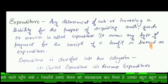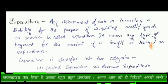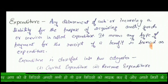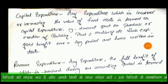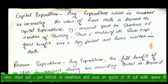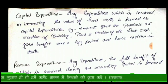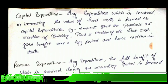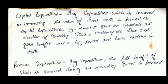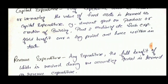Expenditure is classified into two categories: capital expenditure and revenue expenditure. Any expenditure which is incurred for acquiring or increasing the value of fixed assets is termed as capital expenditure — for example, amounts spent on purchase or erection of a building, or purchase of plant and machinery. The benefit of such expenditure lasts for a long period of time, and it is recorded in assets.